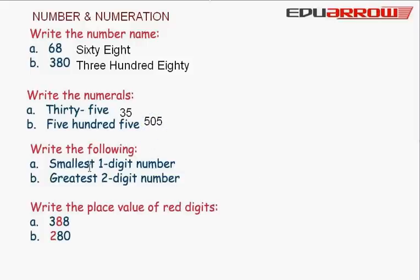Write the following: smallest one digit number is 1, and greatest two digit number is 99.